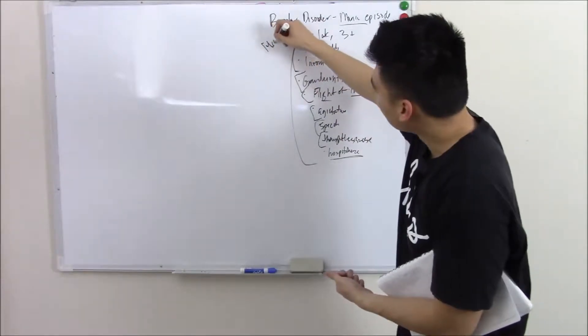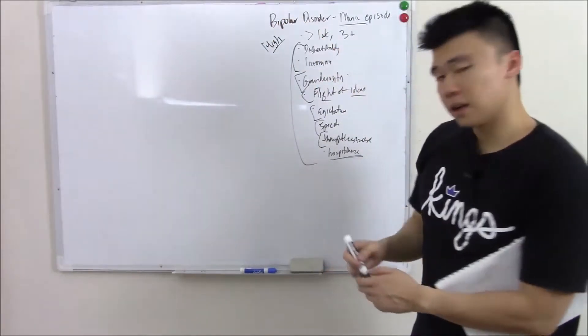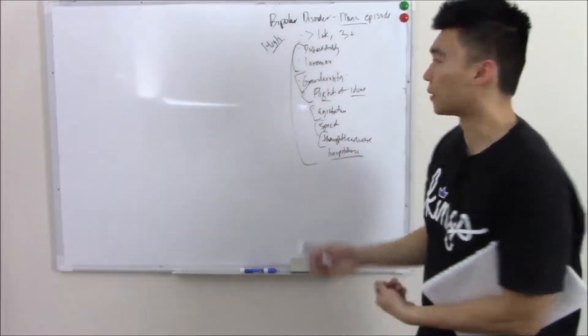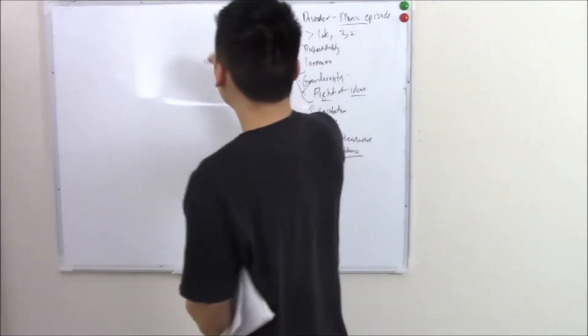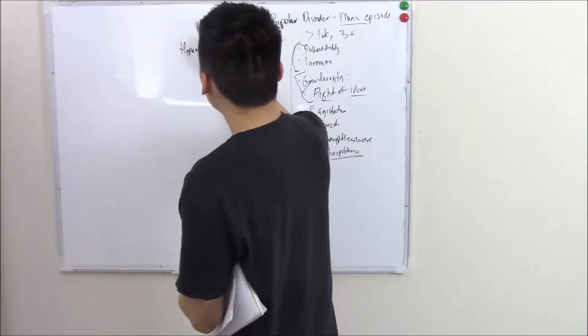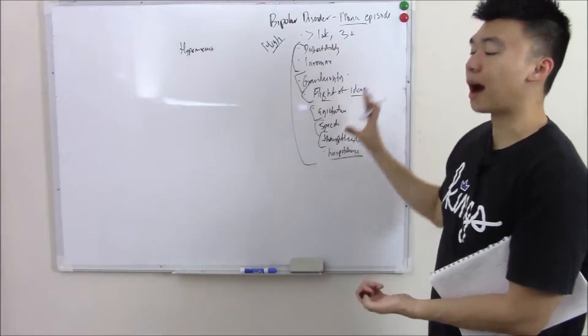That's the high part. Now, what's the low part? Well, I guess compared to this, anything is low, right? So you can have a lower part. That's called hypomania. That's just a milder form of this.